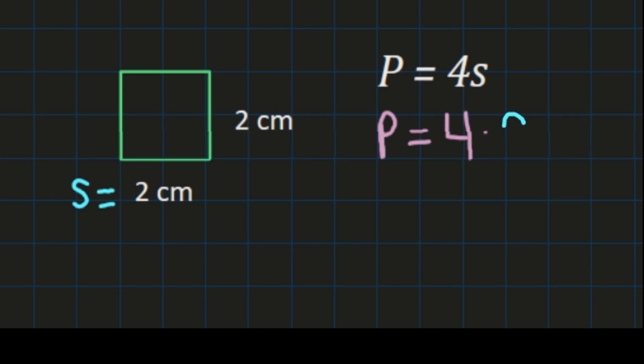and we're going to substitute it for s in the formula. Then we'll have perimeter equals 4 times 2. 4 times 2 is 8, and we're working in centimeters, so our perimeter is 8 centimeters.